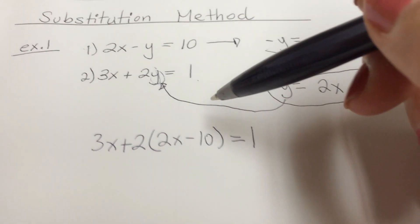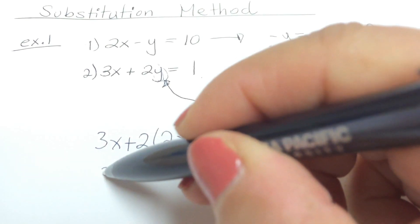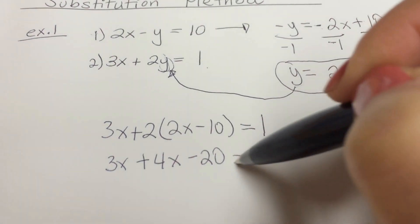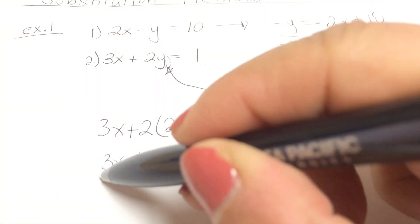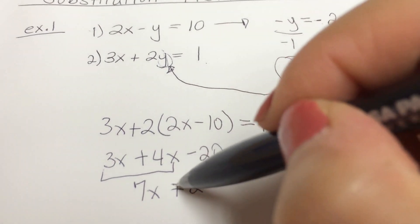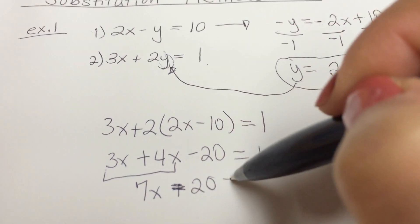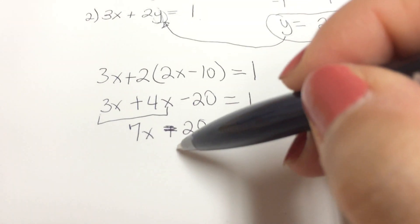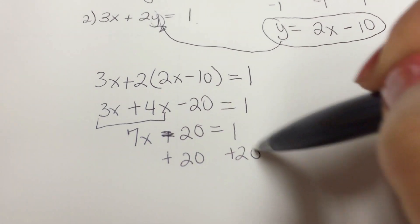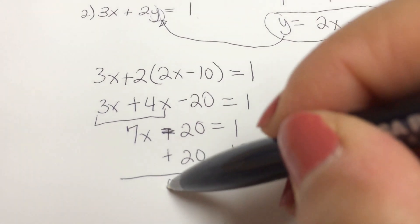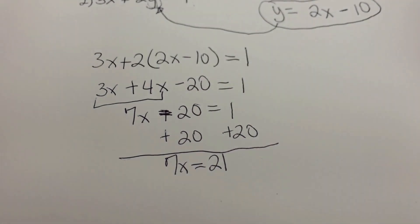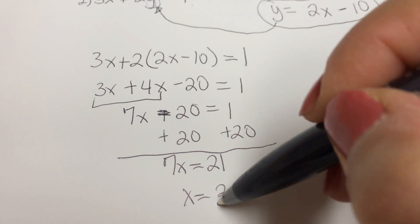Now the algebra starts. We distribute the 2, giving us 3x plus 4x minus 20 equals 1. Combining like terms gives 7x minus 20 equals 1. Adding 20 to both sides gives 7x equals 21. Dividing by 7 on both sides, x equals positive 3.